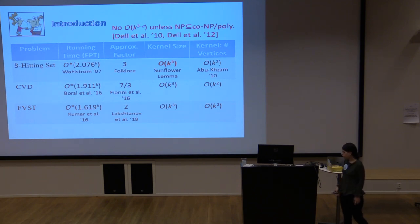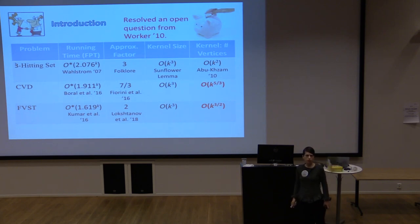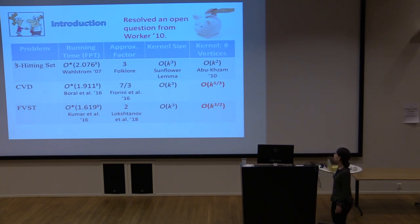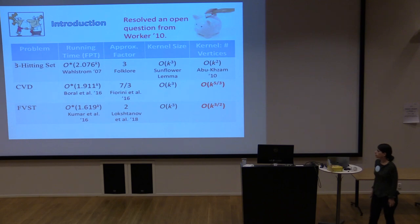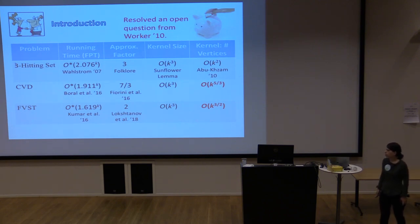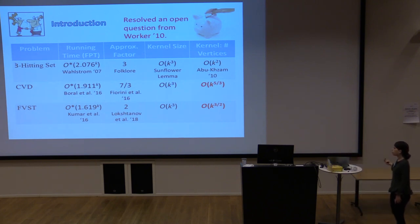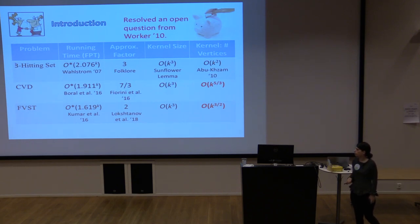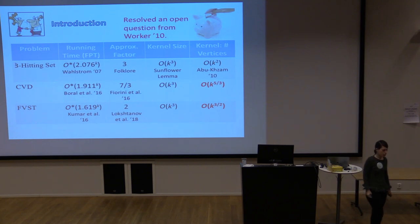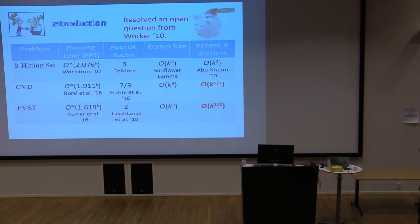What we did in this work is obtain a better number of elements for CVD and FVST. For these particular cases you can see that we get better than k²: specifically k^(5/3) for CVD and k^(3/2) for FVST. This solved an open problem from about ten years ago.